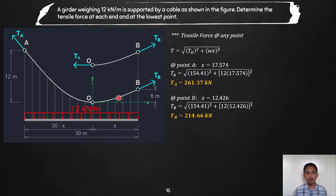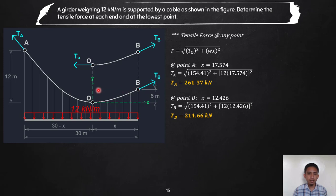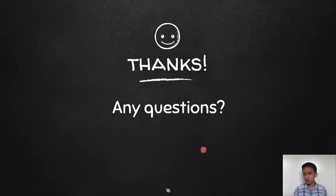The results make physical sense: the lowest point has the smallest tensile force (154.41 kN), support B is closer to the lowest point so T_B = 214.66 kN is less than T_A = 261.73 kN at the more distant support A. Since the cable follows a parabolic curve, stresses are symmetrical about the lowest point. If you have any questions, they will be addressed in the next live meeting. Thank you for watching.